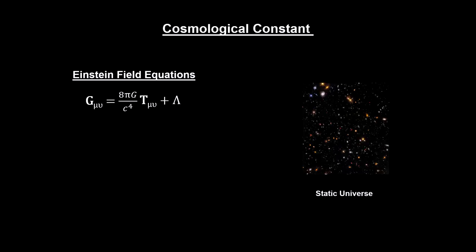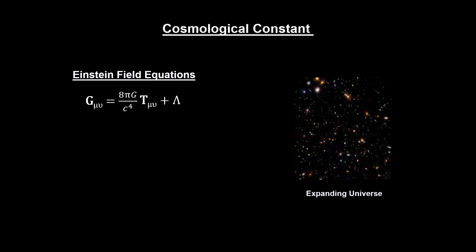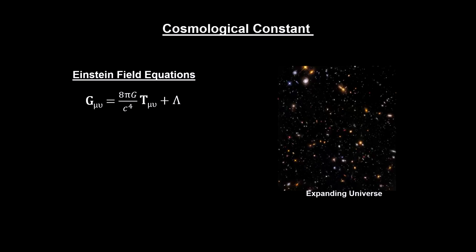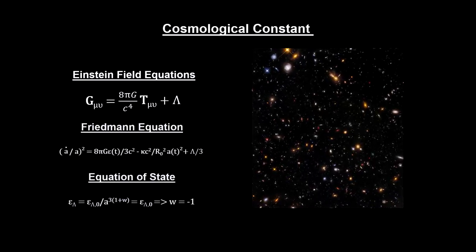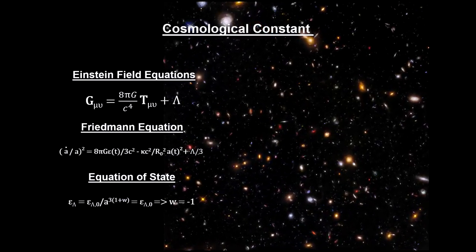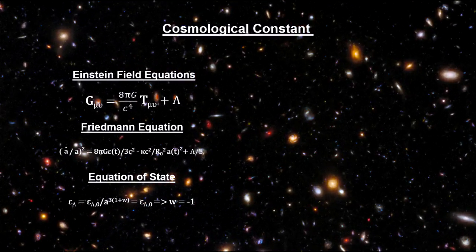We use the symbol lambda to represent this component of the universe. The symbol was first used by Einstein as a cosmological constant to account for a static universe. It went by the wayside when Edwin Hubble discovered that the universe was not static. But it has now been repurposed to represent this vacuum energy.